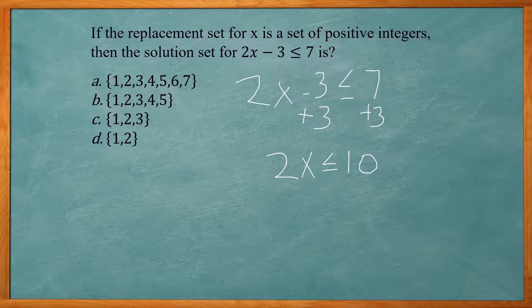And next step here is get rid of the two in front of the X. So this is two times X. So the opposite will be division by two and do it to both sides. So X is less than or equal to 5.